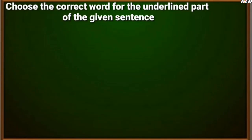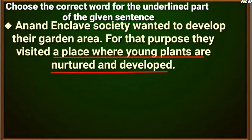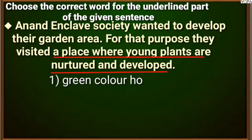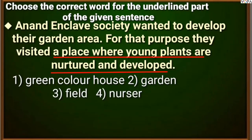Choose the correct word for the underlined part of the given sentence. Anan Enclave Society wanted to develop their garden area. For that purpose, they visited a place where young plants are nurtured and developed. Options: 1. Greenhouse, 2. Garden, 3. Field, 4. Nursery.